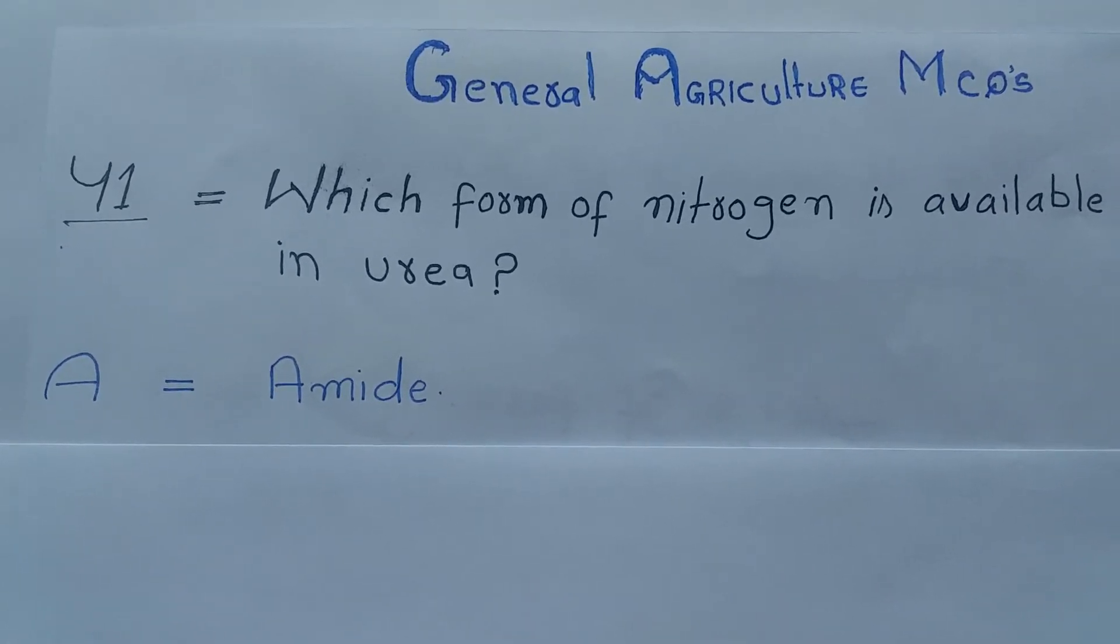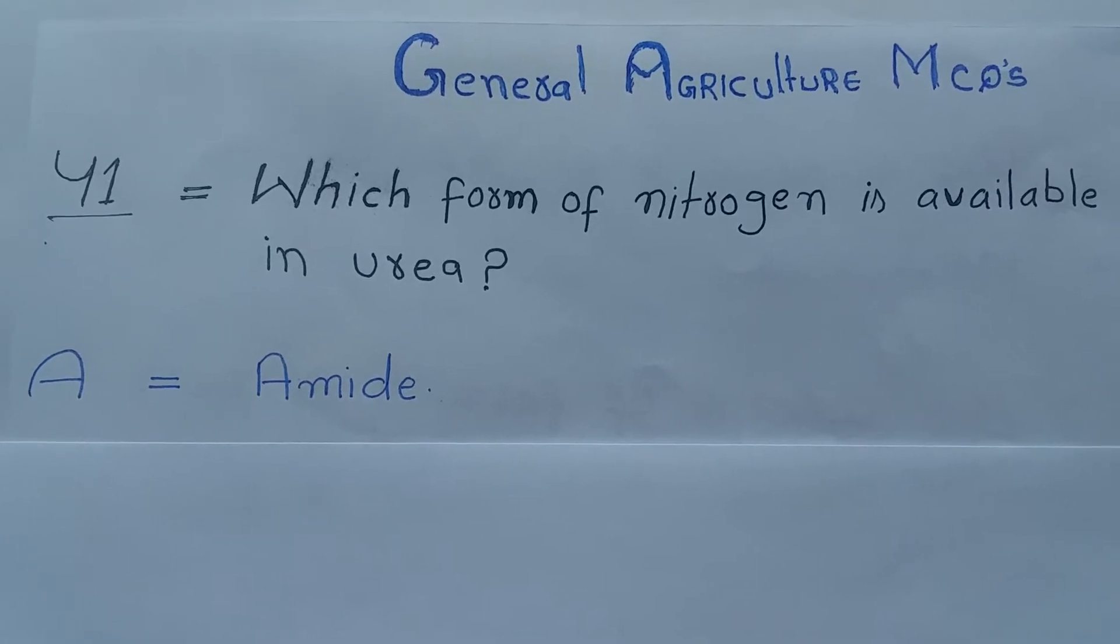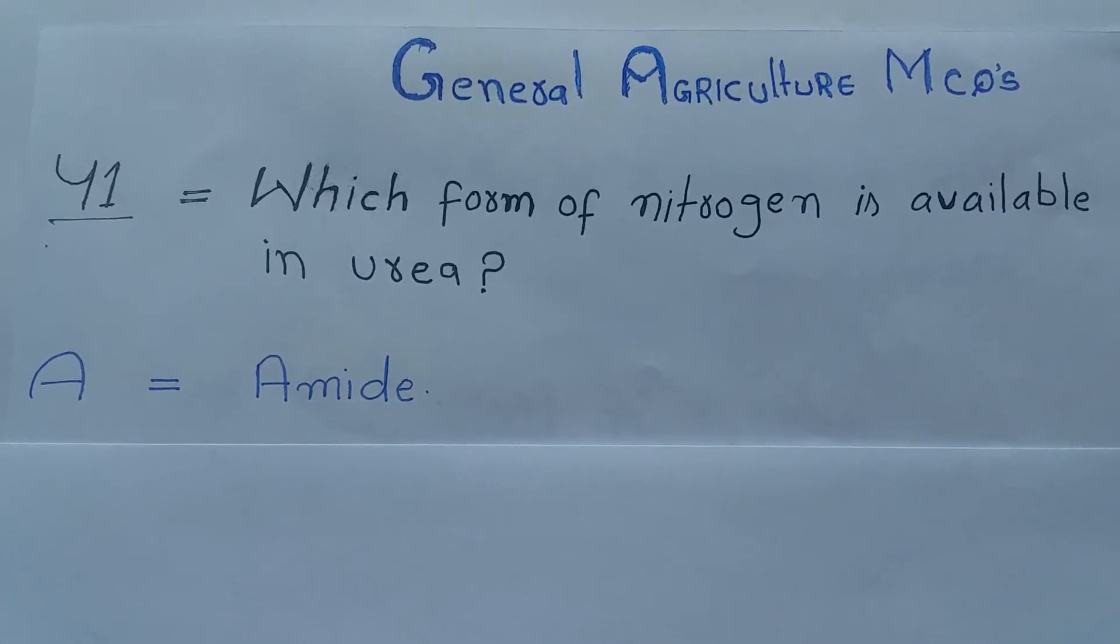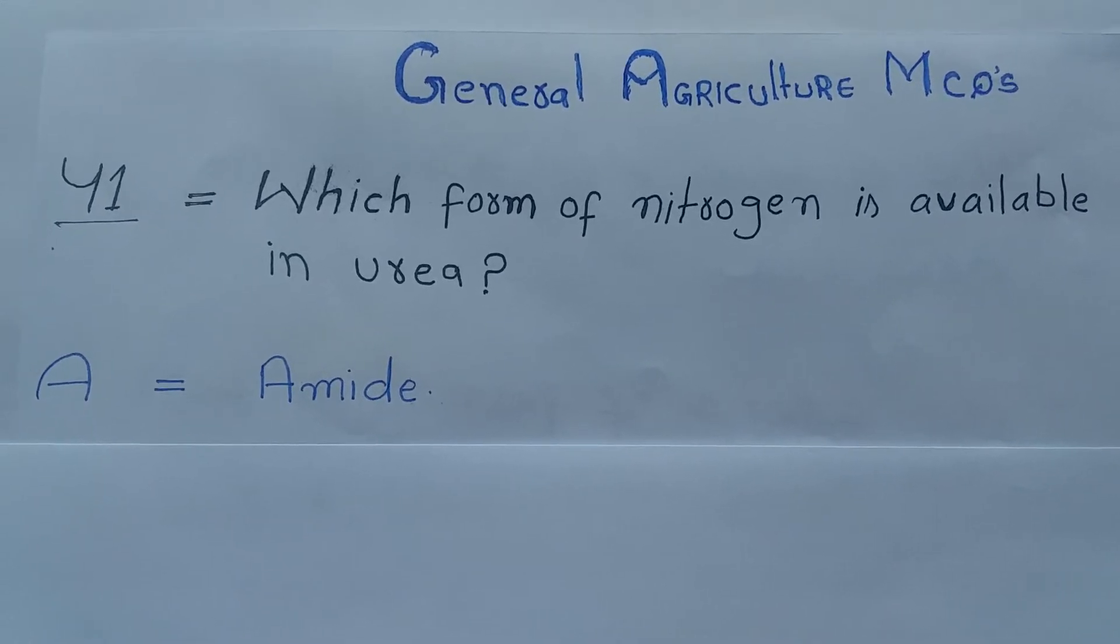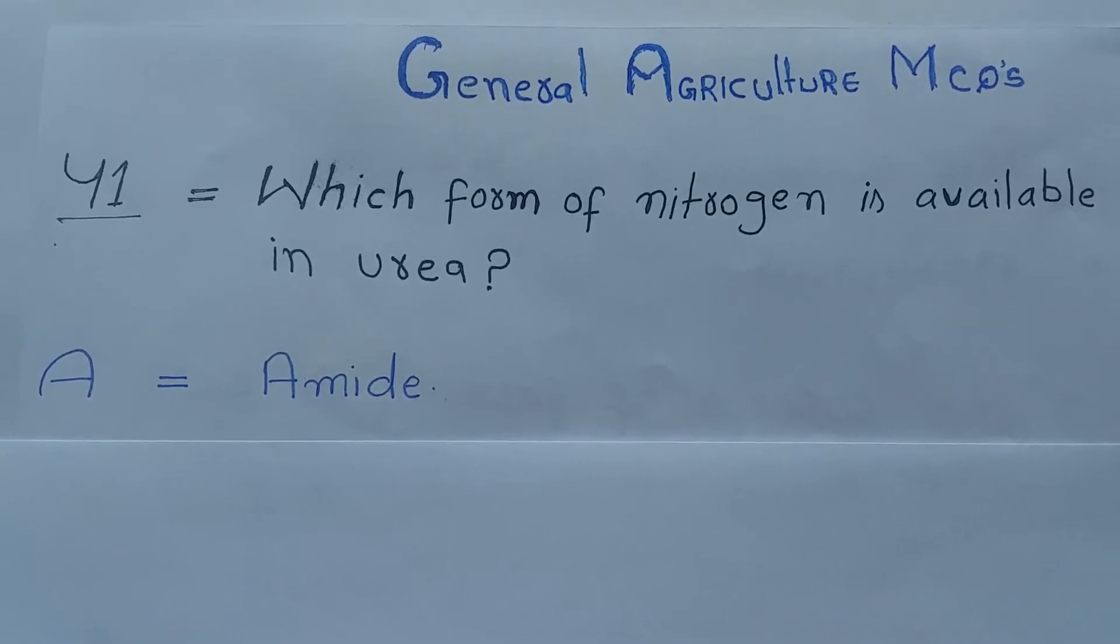Agriculture MCQs. Question number 41: Which form of nitrogen is available in urea? Answer is Amide.